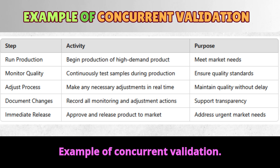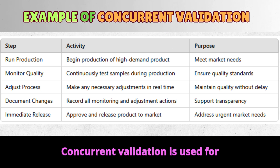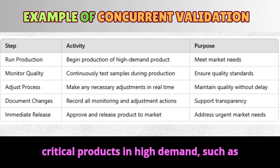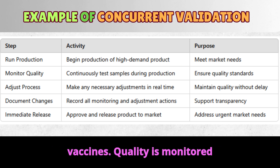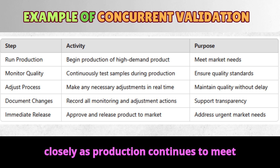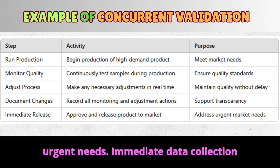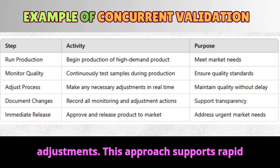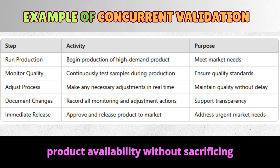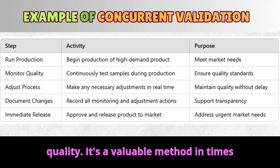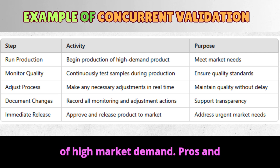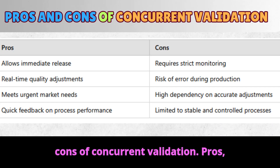Example of concurrent validation. Concurrent validation is used for critical products in high demand, such as vaccines. Quality is monitored as production continues to meet urgent needs. Immediate data collection allows for quick decisions on adjustments. This approach supports rapid product availability without sacrificing quality. It's a valuable method in times of high market demand.